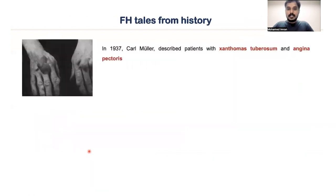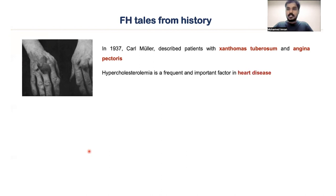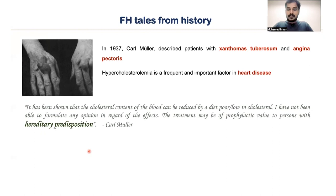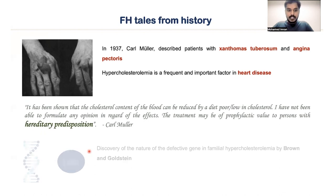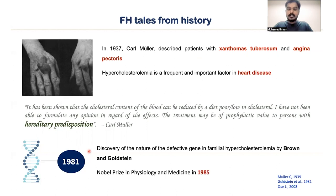When we talk about the history, almost 80 years ago, in 1937, Karl Muller described patients who presented with xanthoma tuberosum and also with angina pectoris, and he expressed that hypercholesterolemia is an important factor for causing heart disease. He also stated that this condition could have a hereditary predisposition. Later in 1981, Brown and Goldstein made a landmark discovery by unraveling the genetic cause behind familial hypercholesterolemia. For this work, they won the Nobel Prize in Physiology and Medicine in 1985.